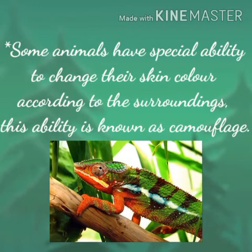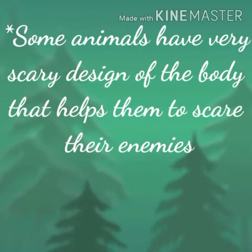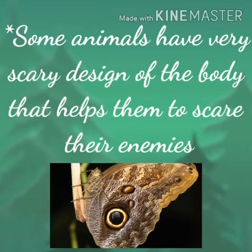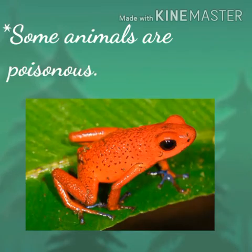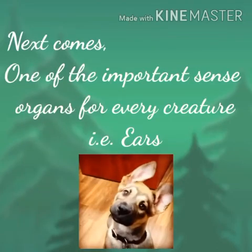For example, the chameleon. Some animals have a very scary design on their body that helps them to scare their enemies, like the big eyes of some butterflies. Some animals are poisonous — this ability helps them to protect themselves from their enemies, because when an animal eats a poisonous animal, it falls sick and avoids eating that type of animal again.